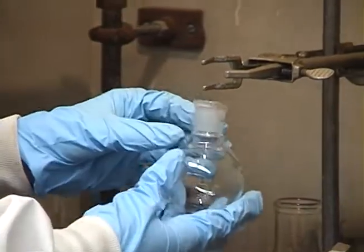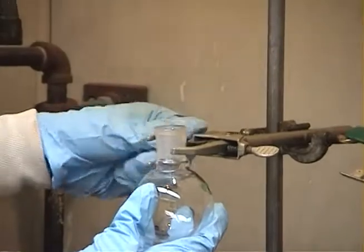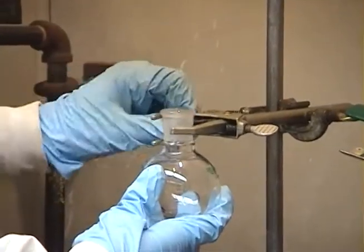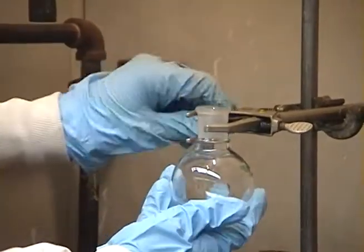First, a round bottom flask is clamped to one ring stand. The flask must be large enough that the solution does not take up more than half the flask.